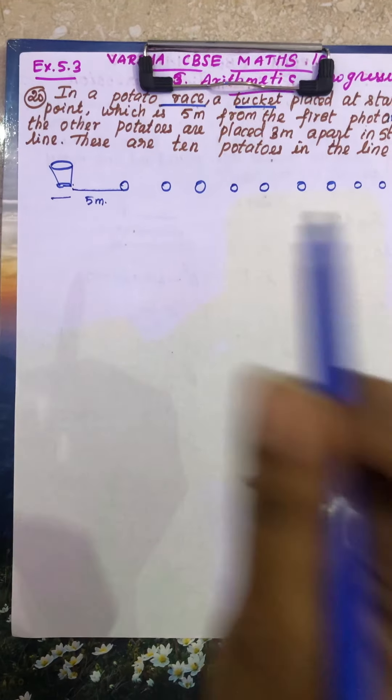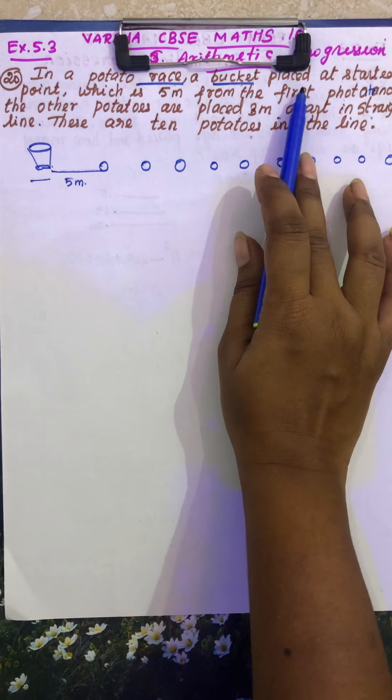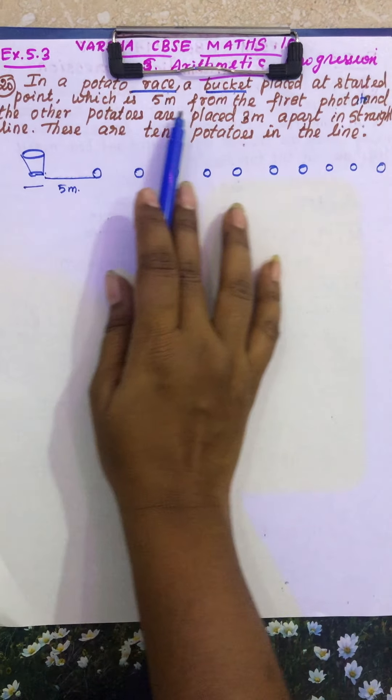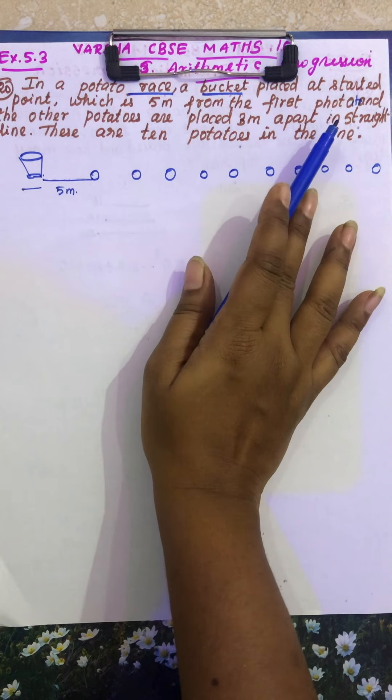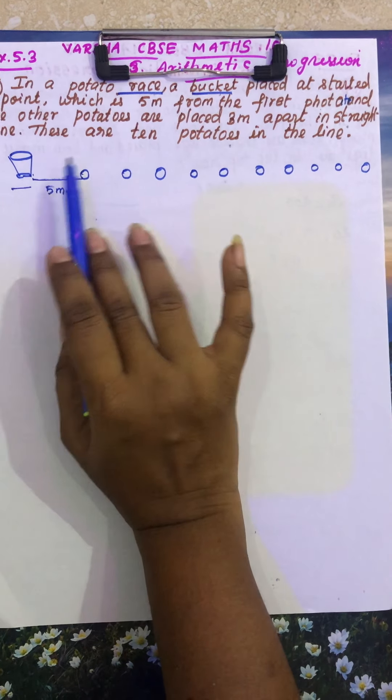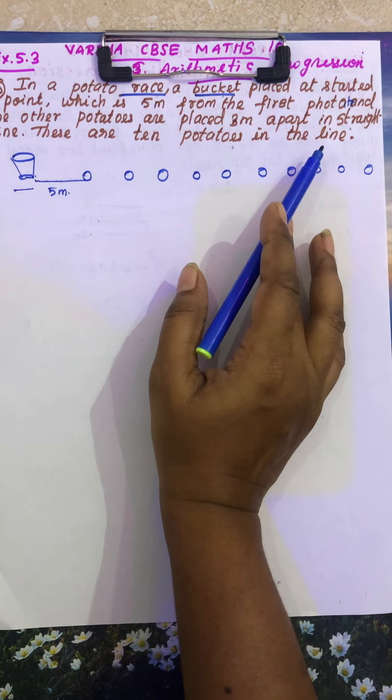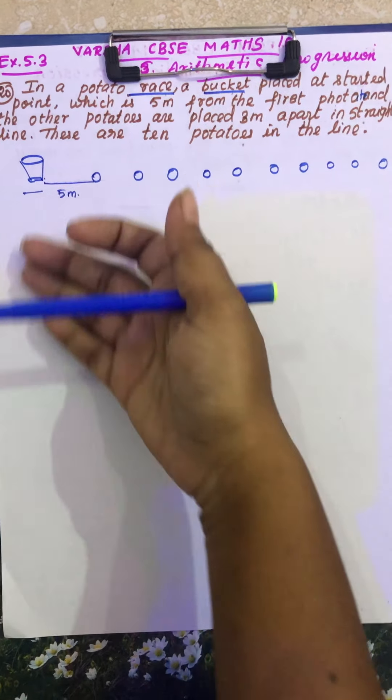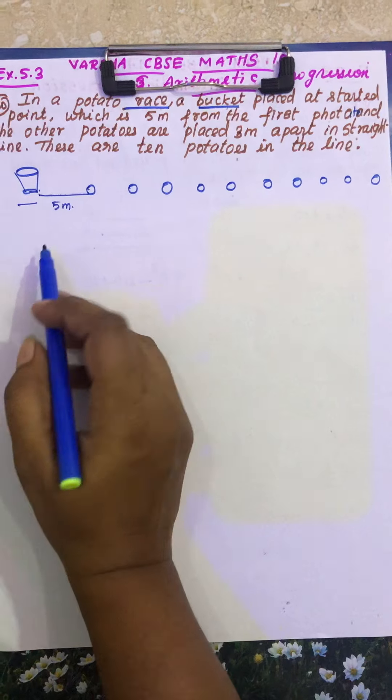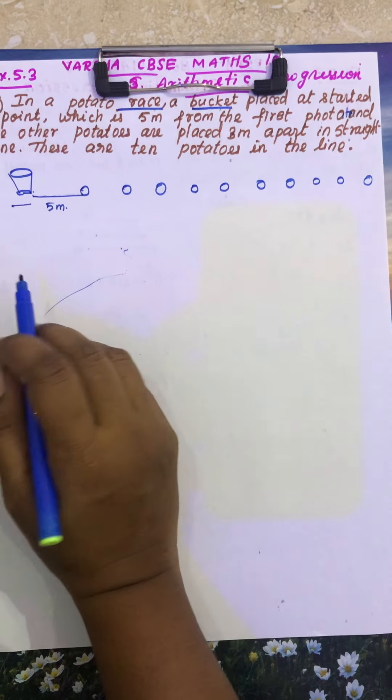Let's go to the sum. So in a potato race, a bucket is placed at a starting point which is 5 meters from the first potato and the other potatoes are placed 3 meters apart in a straight line. These are 10 potatoes in the line. So the question is there, I have written so far, I will explain in the diagram.